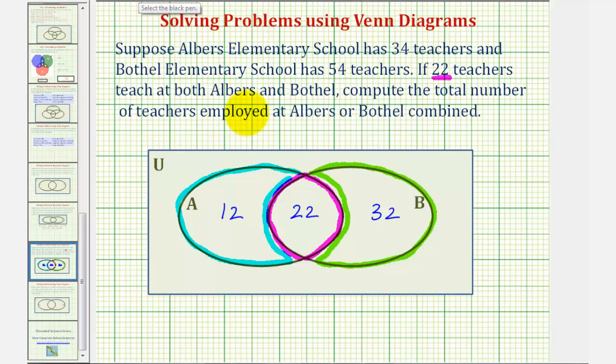Now we have all the information we need. We can now determine the number of teachers employed at Albers or Bothell combined. Using set notation, this would be the number of elements, in this case the number of teachers in A union B, meaning set A or B, which would be equal to 12 plus 22 plus 32, which equals 66. Therefore, there are a total of 66 teachers employed at Albers or Bothell.